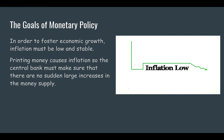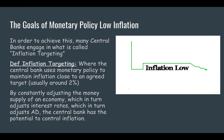Printing money causes inflation, so the central bank must ensure there are no sudden large increases or decreases in the money supply. Many central banks engage in inflation targeting, where they use monetary policy — changes in money supply to change interest rates, to change aggregate demand — to maintain inflation close to an agreed target, usually around 2%. By constantly adjusting the money supply, which adjusts interest rates, which adjusts aggregate demand, the central bank has the potential to keep inflation close to that 2% target.